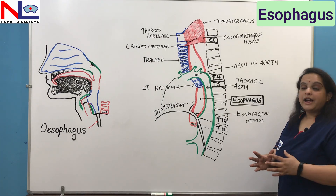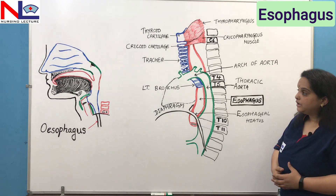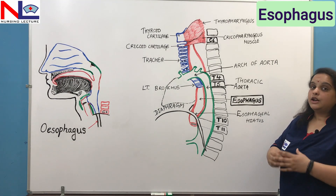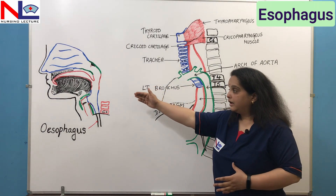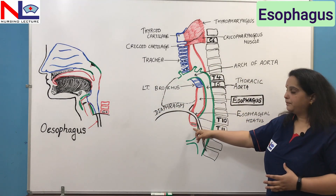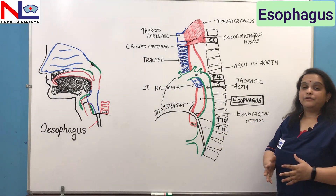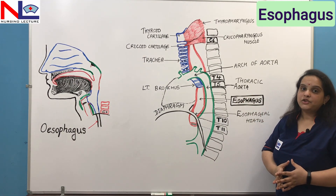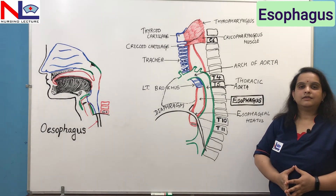In summary, in this lecture we discussed the esophagus — the next part of the GI tract. It is a muscular, tubular, collapsed structure, 25 cm long, extending from the laryngopharynx below the neck to the cardiac portion of the stomach. We covered the wall layers, its relations with neighboring organs, the four constrictions, and the two sphincters. Thank you.